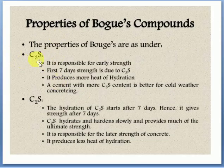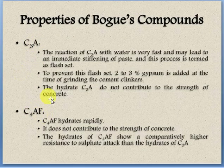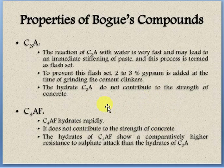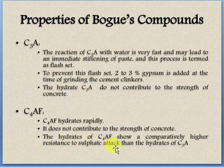C3S and C2S are for strength; C3A and C4AF are for setting time. C4AF — hydrates rapidly but does not contribute to the strength of concrete. The hydrate of C4AF shows comparatively higher resistance to sulphate attack than the hydrate of C3A. So where sulphate attack is a concern — in industries or chemical environments — C4AF content is increased in the cement manufactured for that purpose.